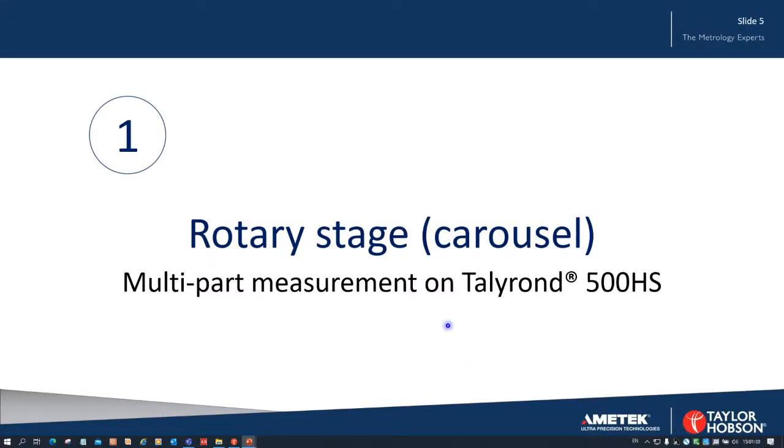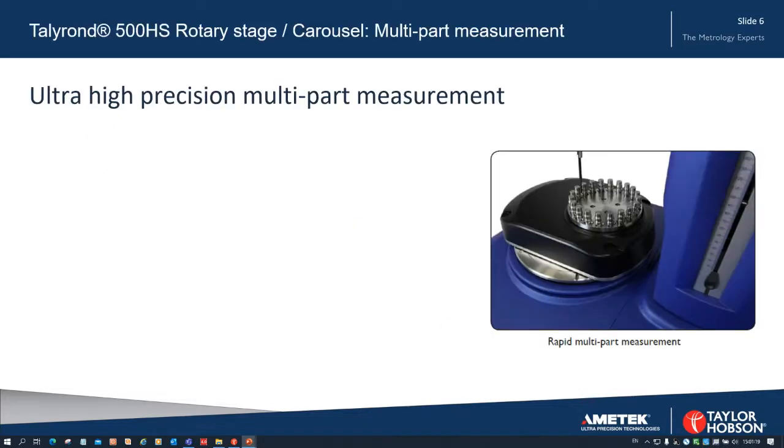So we'll start with the rotary stage, also called the carousel, and this is available on the Tallyrand 500 HS system. It is in the picture there on the right, and you can see it is loaded with some components. It provides ultra high precision multi-part measurement, and this carousel can be taken on or off.